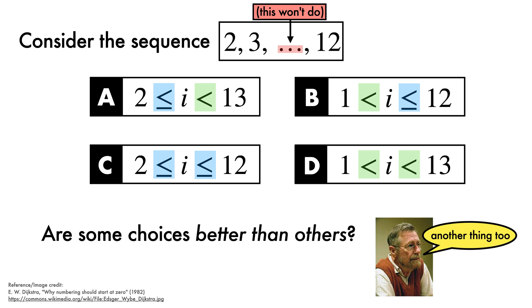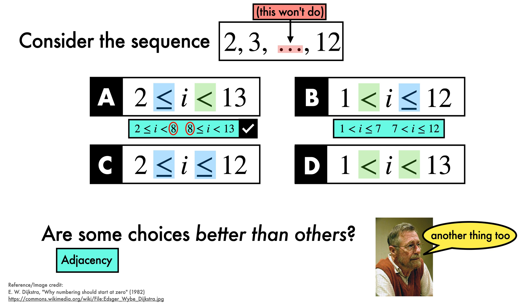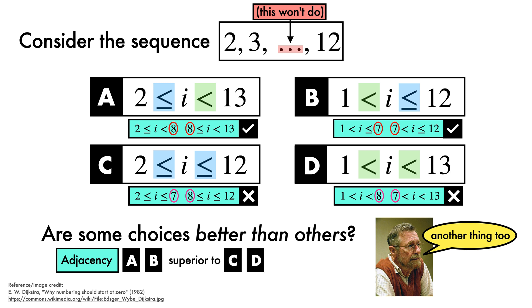And another thing too, says Dijkstra. Consider the issue of adjacency. If we want to write our sequence as the combination of two consecutive subsequences, option A gives us two sequences that match at the boundary. For option B, we get the same effect. For C, however, the subsequence boundaries do not match, nor do they for option D, where the boundaries are no longer even in ascending order. On this aesthetic basis, Dijkstra again considers A and B to be superior to C and D.